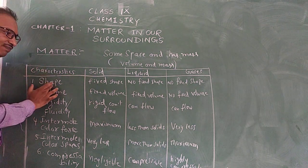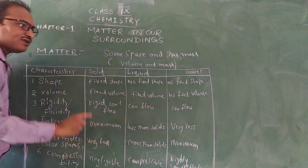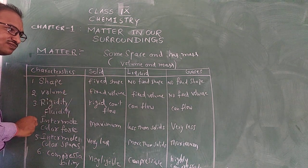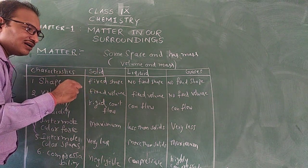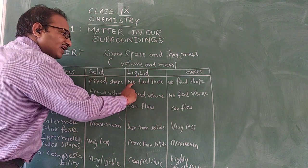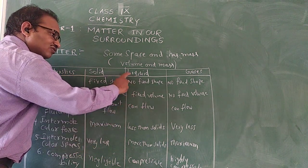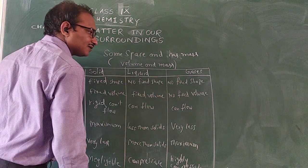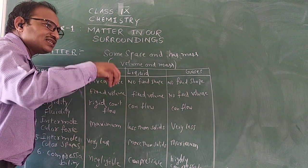Considering shape: solids have fixed shape. Liquids do not have fixed shape. Gases also have no fixed shape — the shape of a gas is the shape of its container. Considering volume: solids have fixed volume. Liquids do have fixed volume, but no fixed shape. Gases have no fixed shape and no fixed volume.